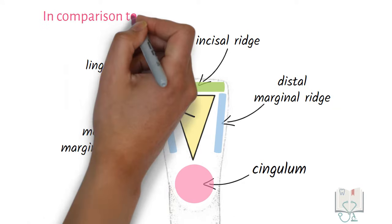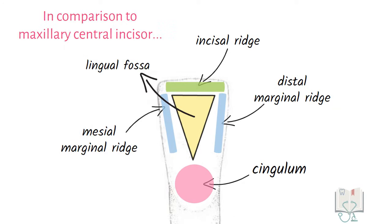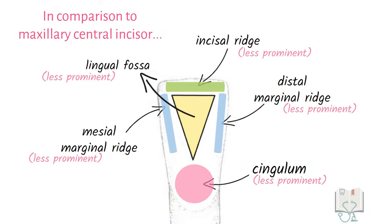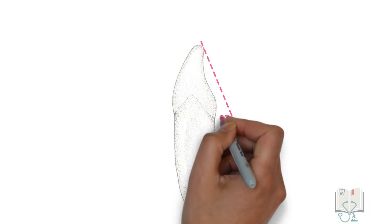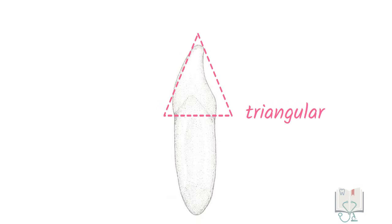In comparison to maxillary central incisor, all the ridges, cingulum and fossa are less prominent. Coming to the mesial aspect, the outline form of the crown from the mesial aspect is triangular in shape.